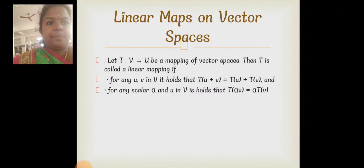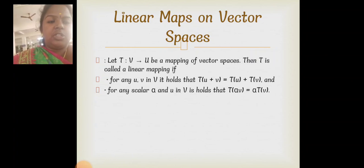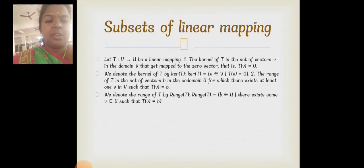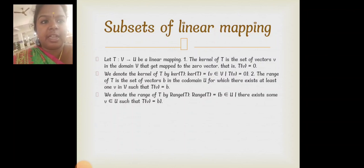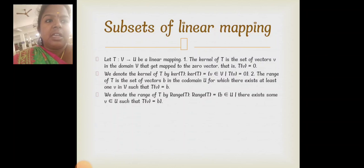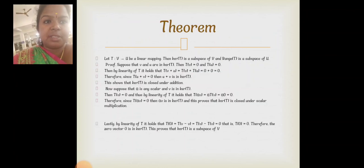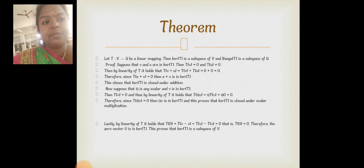We will now see linear maps on vector spaces. Let T from V to U be a mapping of vector spaces. T is called a linear mapping if T(U+V) = T(U)+T(V) and T(alpha·V) = alpha·T(V). The kernel of T is the set of vectors V in the domain that get mapped to the zero vector, i.e., T(V) = 0. A theorem states that kernel(T) is a subspace of V and range(T) is a subspace of U.